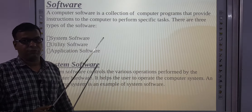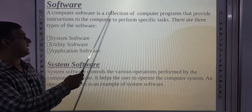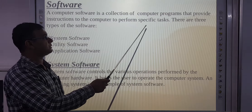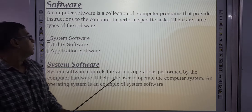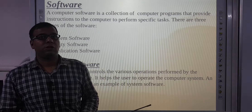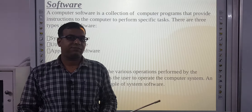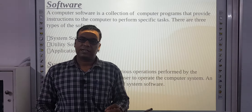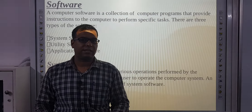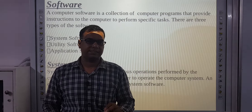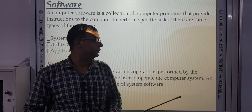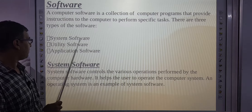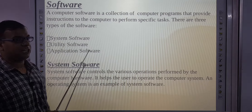Now we will discuss software. A computer software is a collection of computer programs that provide instructions to the computer to perform specific tasks. Software is a logical part of a computer — unlike hardware, you cannot touch it. There are three types of software: system software, utility software, and application software.